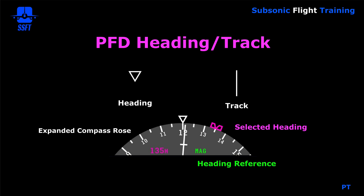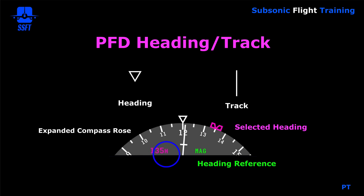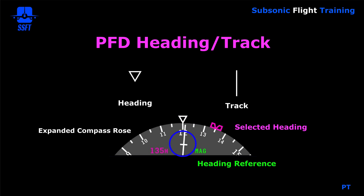The heading reference can be magnetic or true, and the selected heading is always shown in magenta. We have a selected heading marker and the selected heading numerical value, as well as the 'H' denoting that it is the selected heading. The magnetic or true indication is green. The upside-down triangle is your heading reference, and the track line is denoted by a white line — again, 70 degrees from side to side on the heading display.